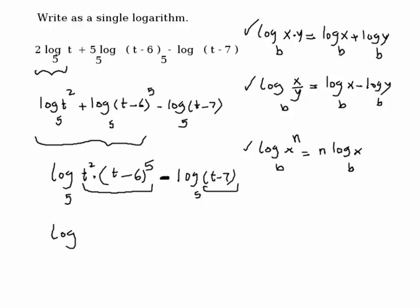So that would be the same as t squared times t minus 6 to the power of 5 over t minus 7. Again, the base is 5. This is how you write as a single logarithm.